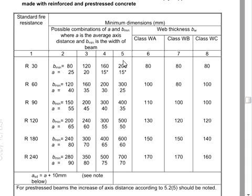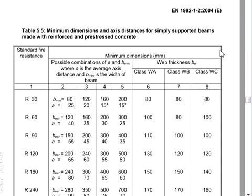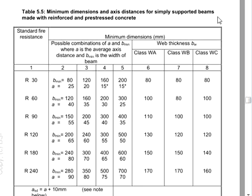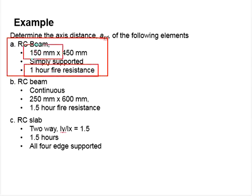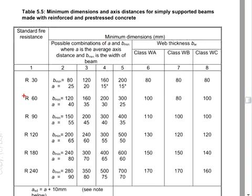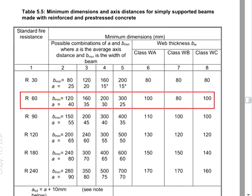In order to solve these questions, you will have to refer to Eurocode Part 2, Table 5.5. This table is meant for a simply supported beam, so it is used to solve the first question. It is stated that you need one hour fire resistance, so you will refer to the fire rating of 60 minutes.